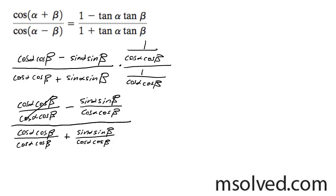So this becomes one, and down here in the denominator this becomes one. Here's tangent alpha, here's tangent beta, same thing down here.